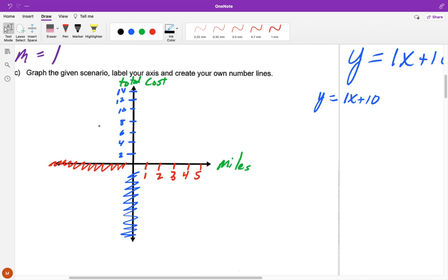So what this question is testing is, are you able to identify that the only part of our graph can be in this quadrant one, because we can't have negative miles or negative cost? So the graph can't go anywhere beyond that. We know our b equals 10, our slope equals one. So my starting point here is at 10.